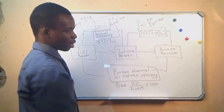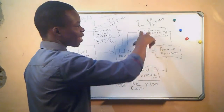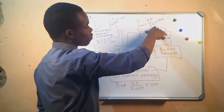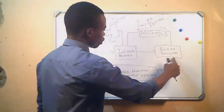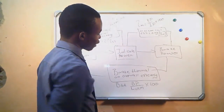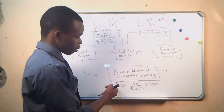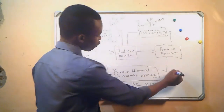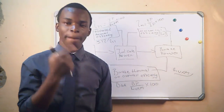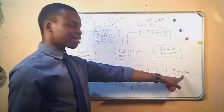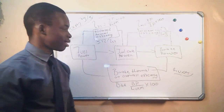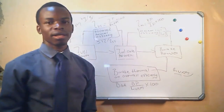The mechanical efficiency is the difference between the indicated power and the brake power, given by brake power divided by indicated power, times 100. And the brake thermal efficiency, also called the overall efficiency, is the difference between the fuel power and the brake power — given by brake power divided by heat value times mass, times 100. Mass should be in kg per second so that we have watts divided by watts.